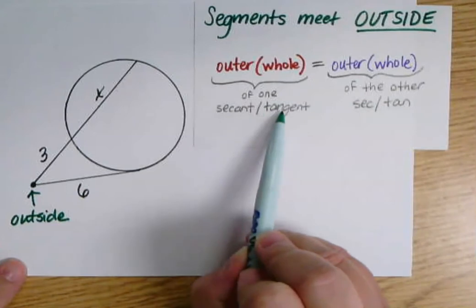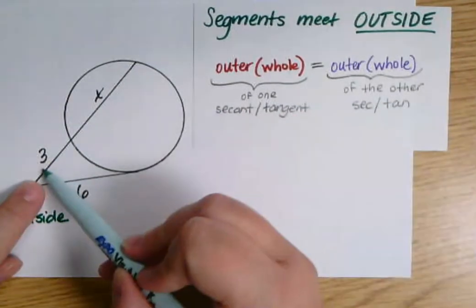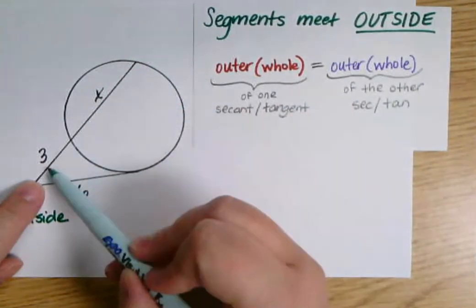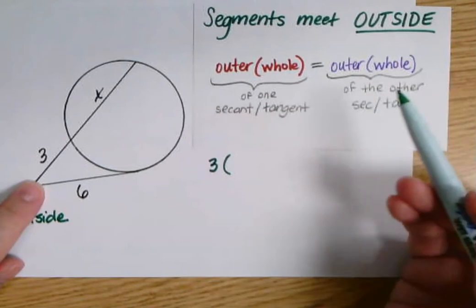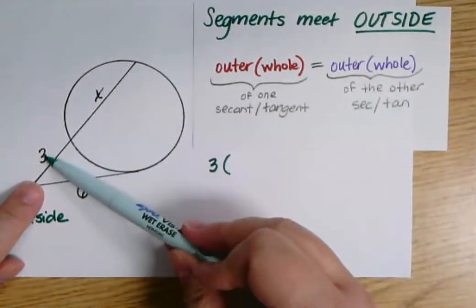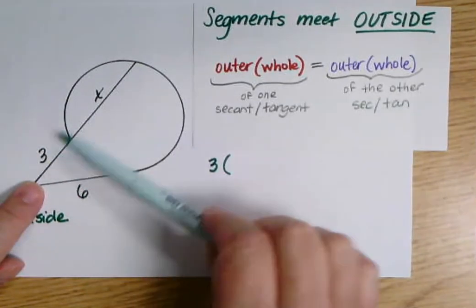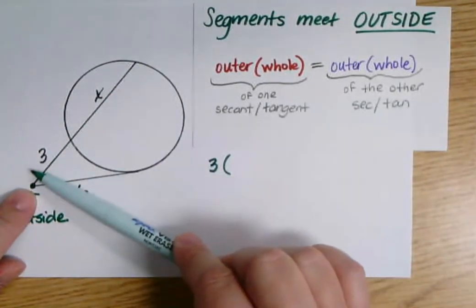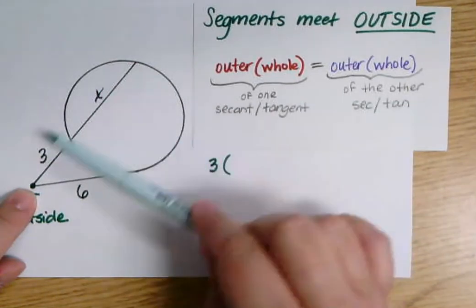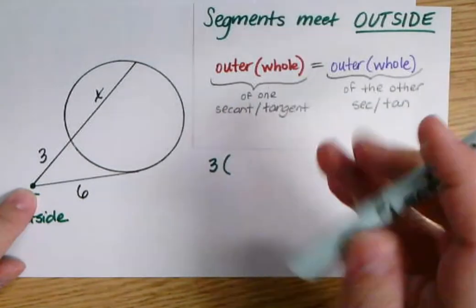And my segment could be a secant or a tangent. I don't really care. I'm going to look at one of them and say, OK, the outer part of this, the part that's outside the circle is just the three. The whole thing, and remember to get two pieces and say I want to go the entire length, I would add them. Do not think three X here. We're not multiplying. We would say if I want this part plus this part, that's addition. So the whole length is three plus X.